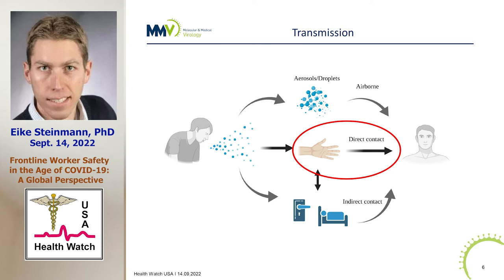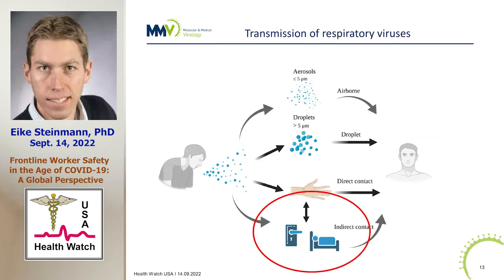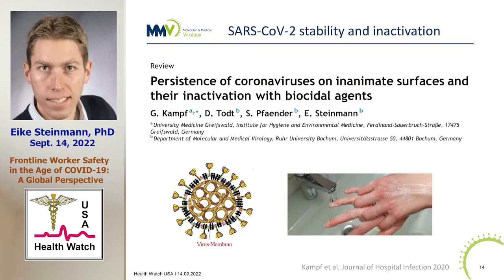Now, what about indirect contact — surfaces? What roles do they play? We invested a couple of experimental approaches to look into that. We got a lot of feedback after we published in early 2020 a review about the information we had about coronavirus on inanimate surfaces, based on data from SARS-CoV-1, MERS, and other coronaviruses including seasonal coronaviruses. This review was highly cited. We got a lot of feedback because there was information from other studies that the virus is stable for a couple of days in the environment, and people were afraid to touch surfaces, posts, and packages.